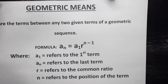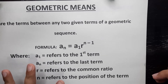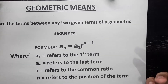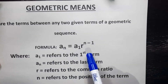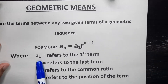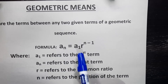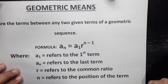Geometric means are the terms between any two given terms of a geometric sequence. The formula is still the same as a geometric sequence: a sub n is equal to a sub 1 times r raised to the power of n minus 1, where a sub 1 refers to the first term, a sub n refers to the last term, r refers to the common ratio, and n refers to the position of the term.